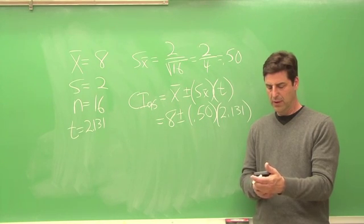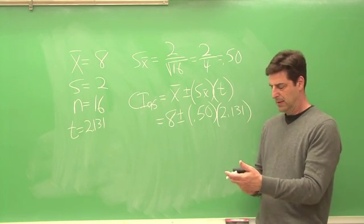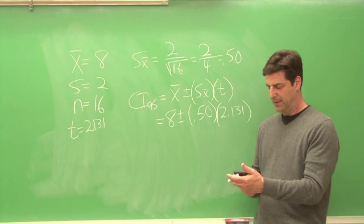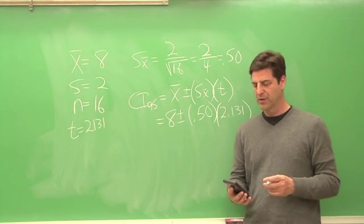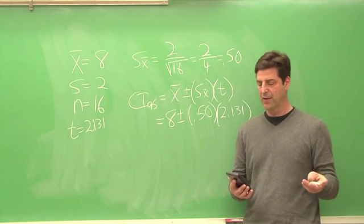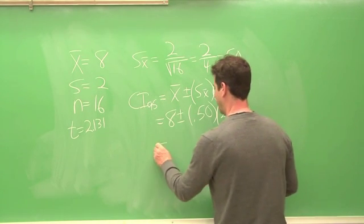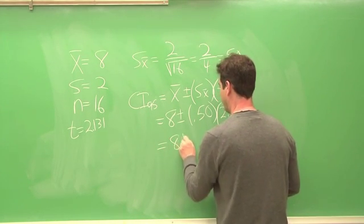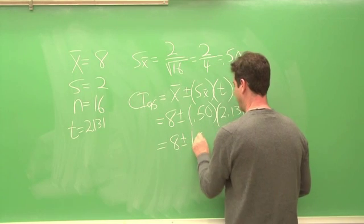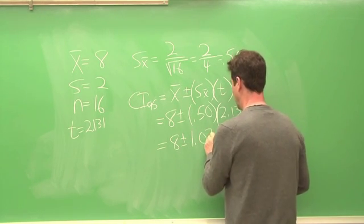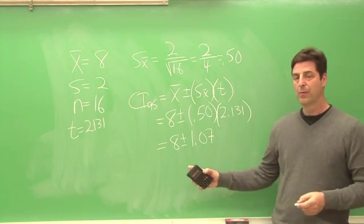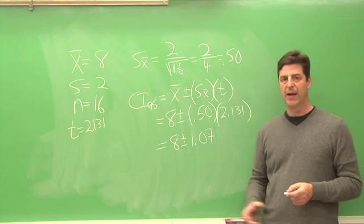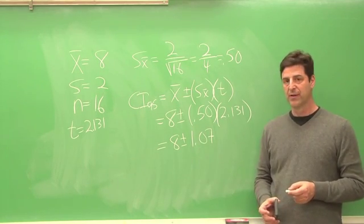2.131 times 0.5 equals 1.0655. Let's just round that up to 1.07. And now we subtract 1.07 from 8 and we add 1.07 to 8.